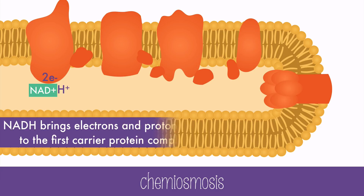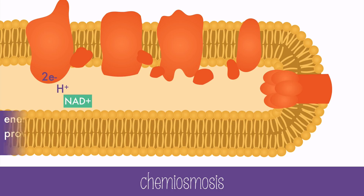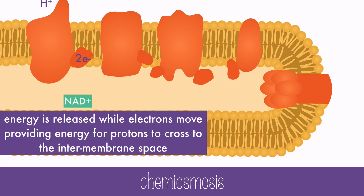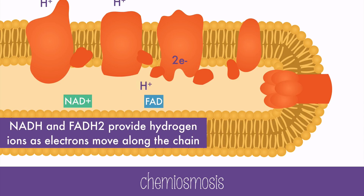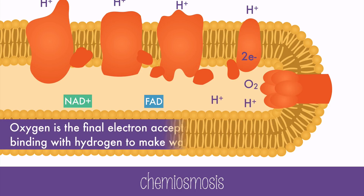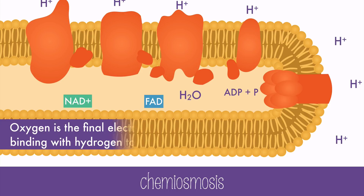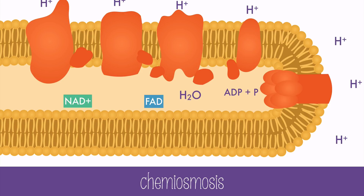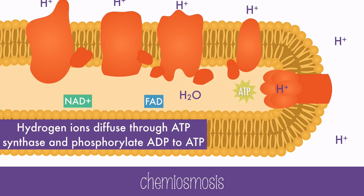NADH will supply hydrogen ions and two electrons for the first carrier, which will pass the electrons to the next carrier. Energy is released while the electrons move, providing energy for protons to cross to the intermembrane space. NADH and FADH₂ will provide hydrogen ions to be moved to the intermembrane space. The electrons need a final electron acceptor, which will be the oxygen molecule. Oxygen will rapidly react with hydrogen ions in the matrix to form water. Now that there is a very high concentration of protons in the intermembrane space, they will diffuse through ATP synthase, which will phosphorylate ADP to make ATP — ultimately making up to 34 ATP per glucose molecule in this step alone.